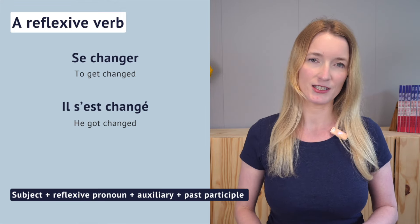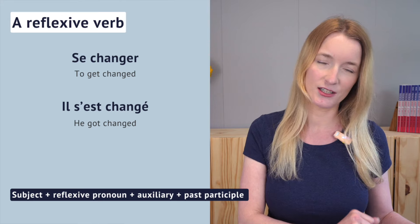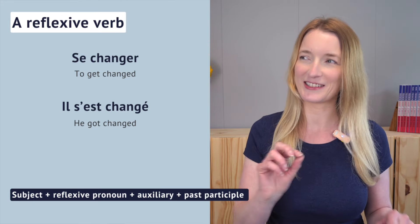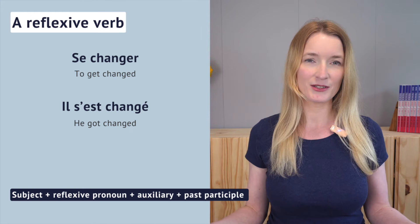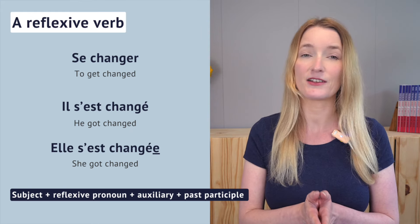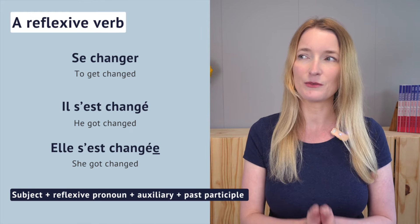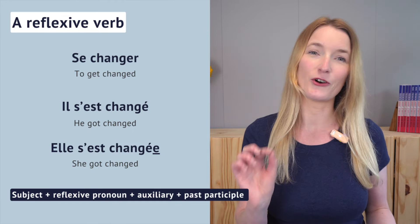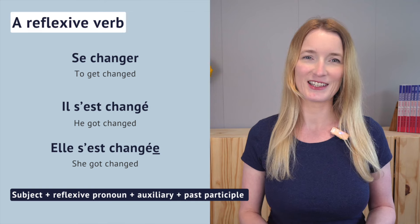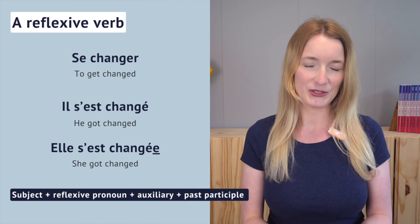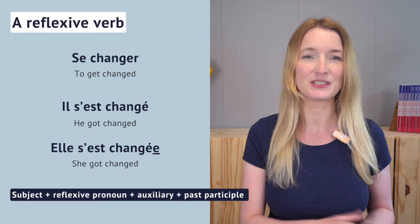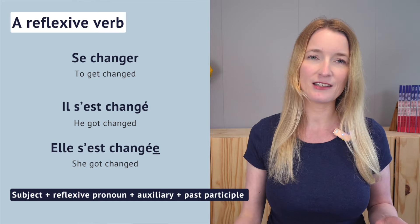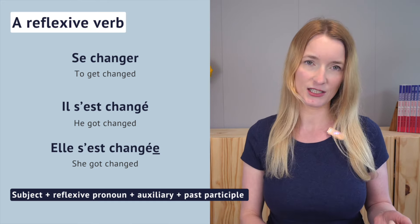So we have 'il s'est changé'. Now that's where the lesson starts to get interesting. If it's a woman, we are going to say 'elle s'est changée' — and here we have an E at the end of 'changé'. In this case the past participle agrees in gender and number. This is why we have an E at the end. It doesn't happen with 'il' because 'il' is masculine.